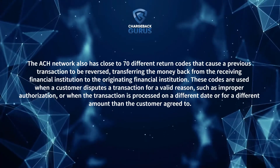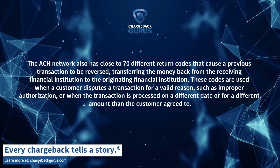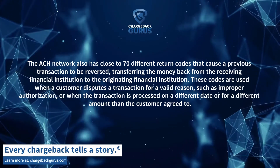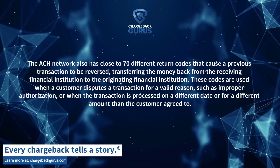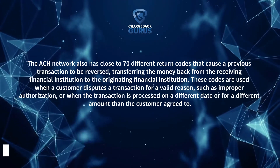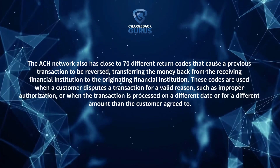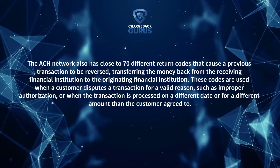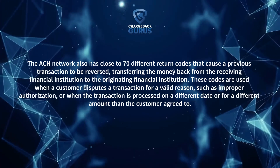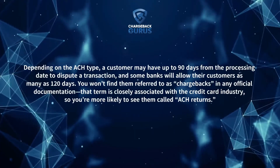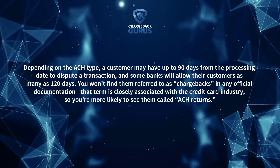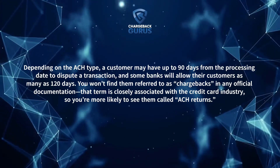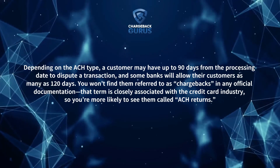The ACH network also has close to 70 return codes that cause a previous transaction to be reversed, transferring the money back from the receiving financial institution to the originating financial institution. These codes are used when a customer disputes a transaction for a valid reason, such as improper paperwork, or when the transaction is processed on a different date or for a different amount than the customer agreed to. Depending on the ACH type, a customer can have up to 90 days from the processing date to dispute a transaction, and some banks will allow their customers as many as 120 days.